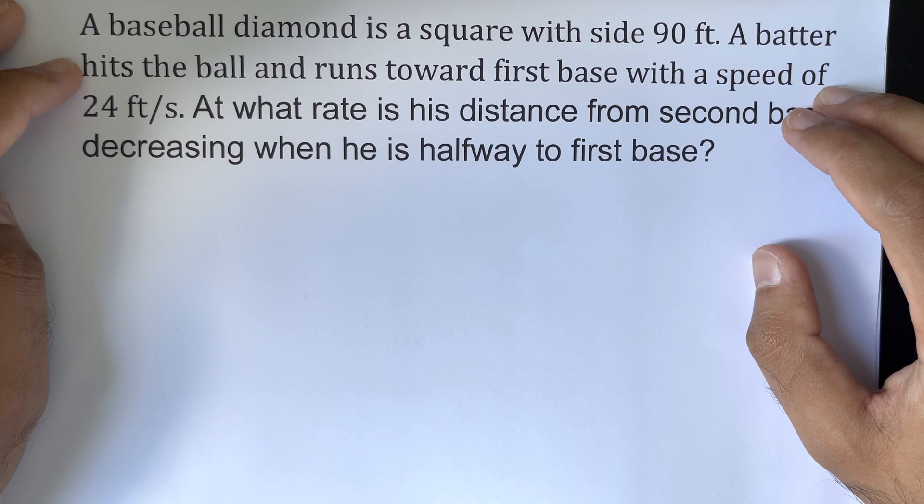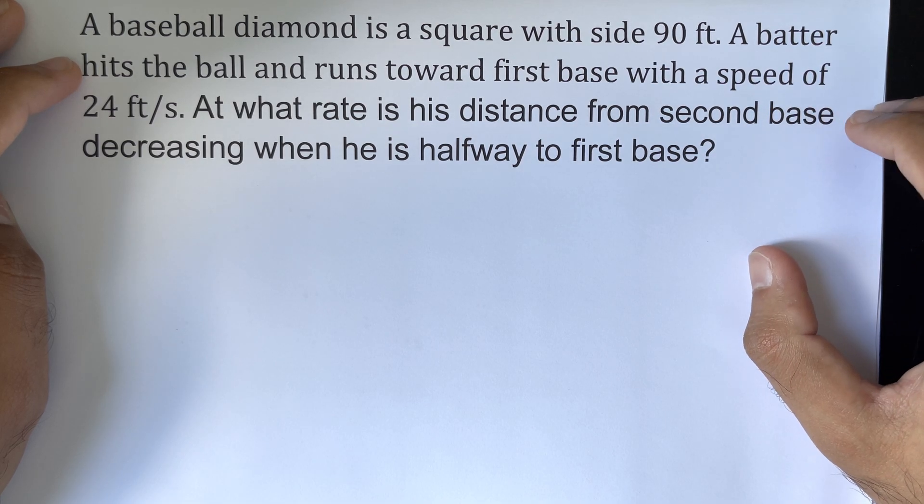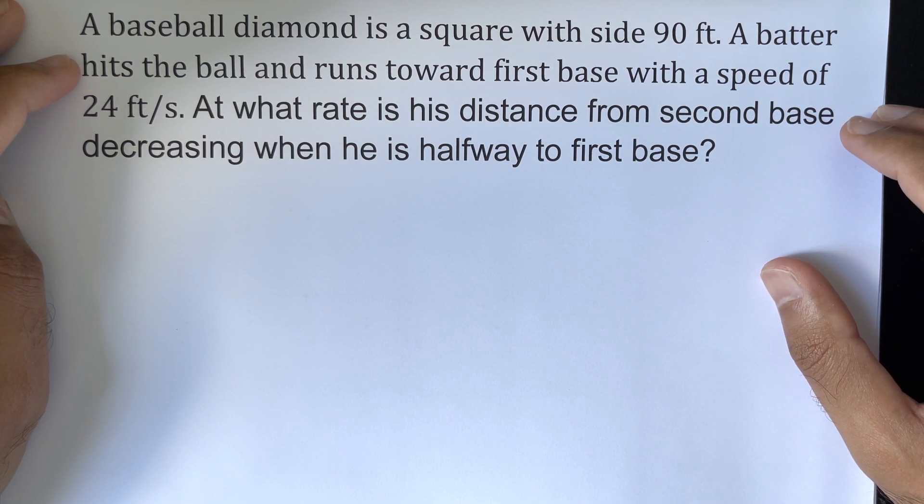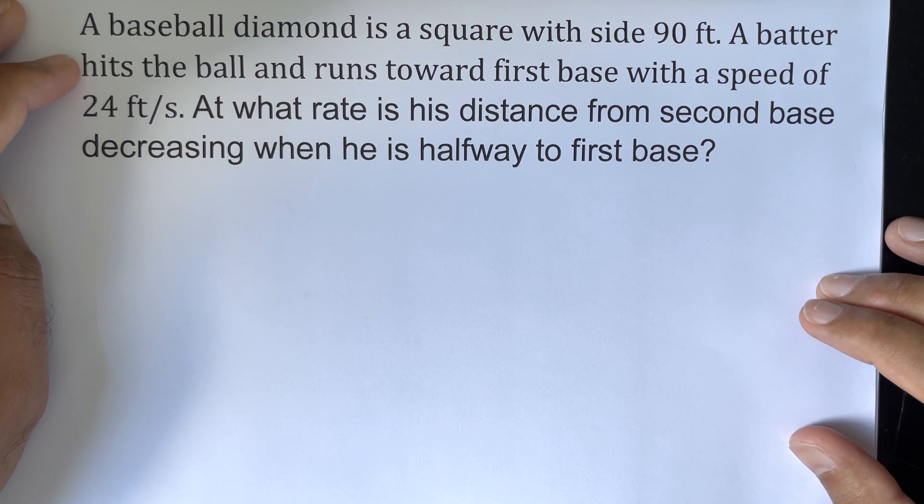A batter hits the ball and runs toward first base with a speed of 24 feet per second. At what rate is his distance from second base decreasing when he is halfway to first base?